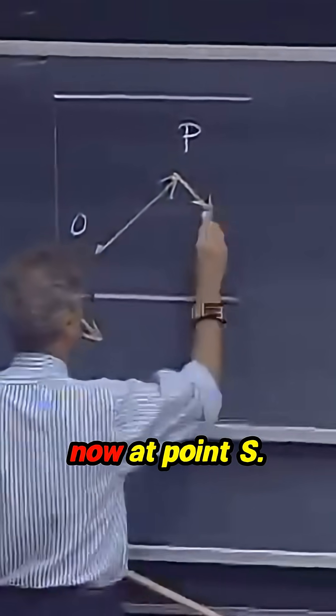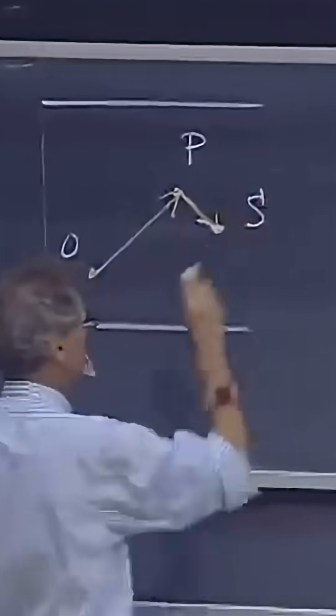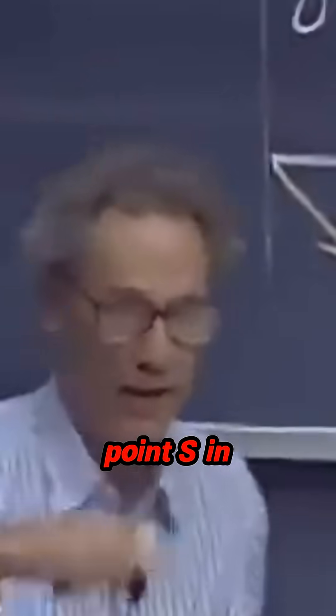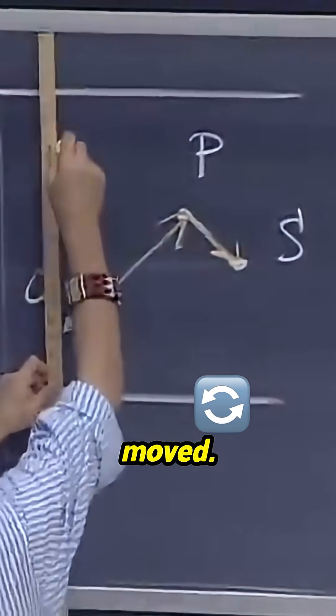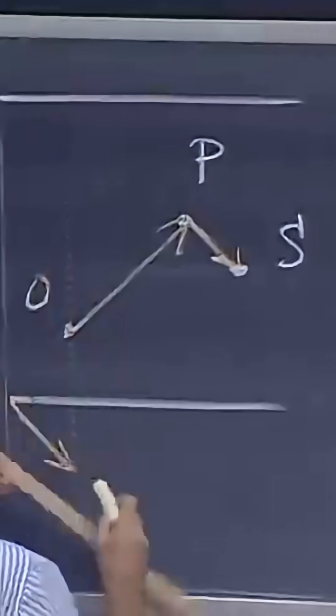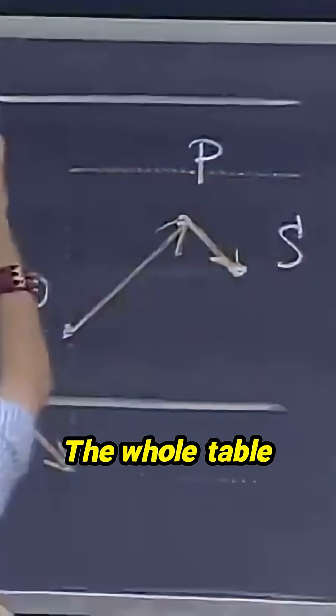And so you will see me now at point S. You will see me at point S in 26-100, although I'm still standing at the same location on the table. The table has moved. This is now the position of the table. The whole table has shifted.